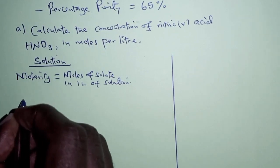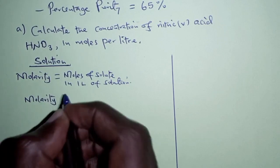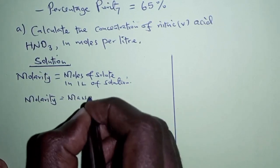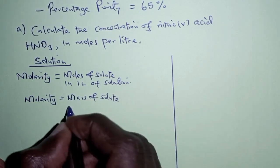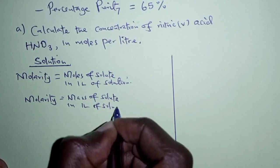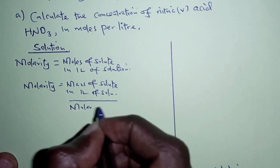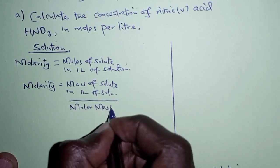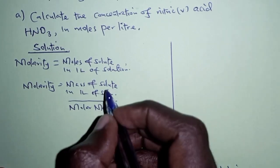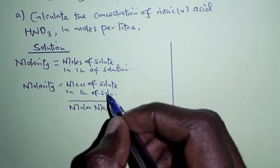Molarity is calculated by the formula: mass of solute in one liter of solution, all over the molar mass, or relative formula mass. From this formula, we are first going to determine the mass of solute in one liter of the solution. The solute in this case is nitric acid.